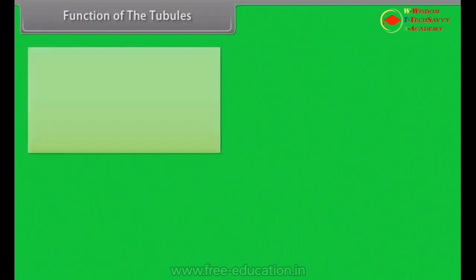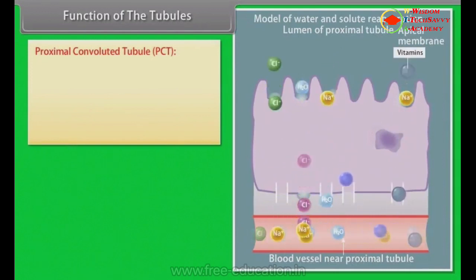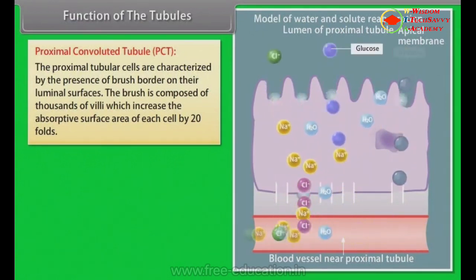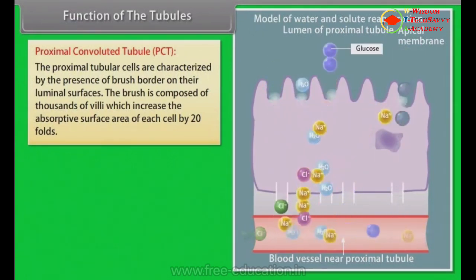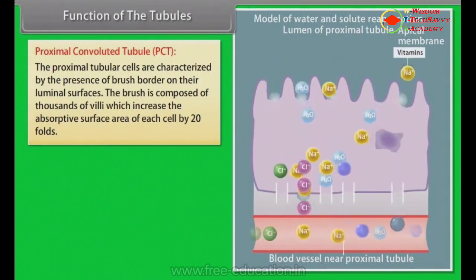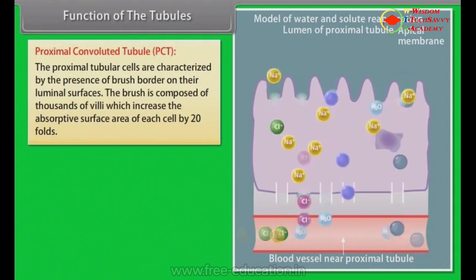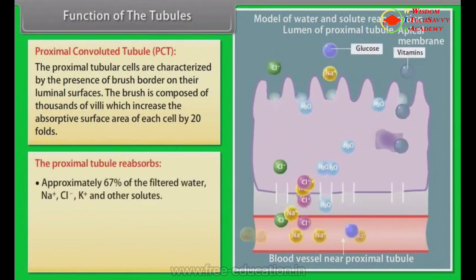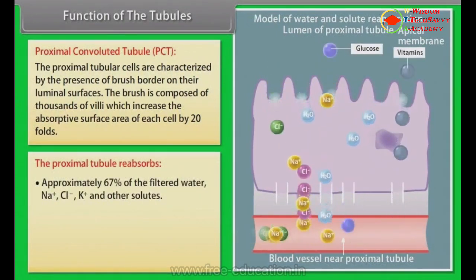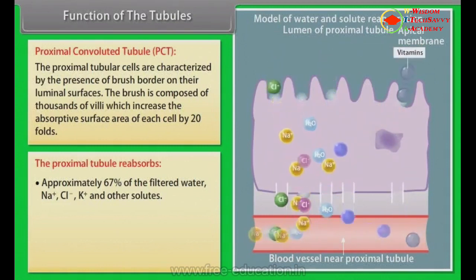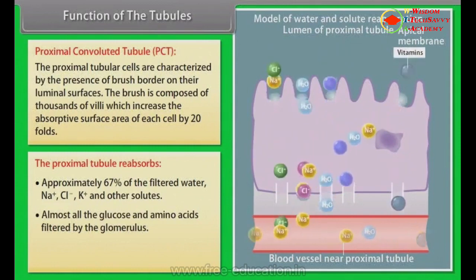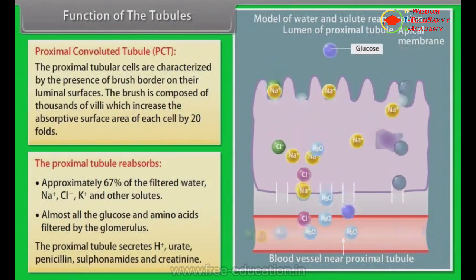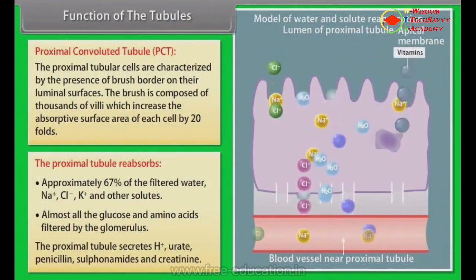Function of the tubules — Proximal convoluted tubule (PCT). The proximal tubular cells are characterized by the presence of a brush border on their luminal surfaces. The brush border is composed of thousands of villi, which increase the absorptive surface area of each cell by 20 folds. The proximal tubule reabsorbs approximately 67% of filtered water, Na+, Cl-, K+, and other solutes, and almost all the glucose and amino acids filtered by the glomerulus. The proximal tubule also secretes H+, urate, penicillin, sulphonamides, and creatinine.